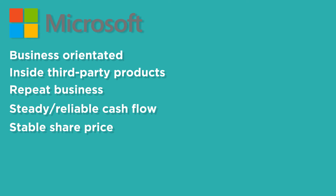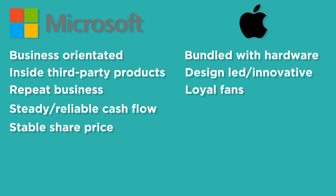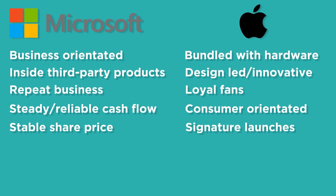Microsoft has a steady, reliable cash flow which means its share price is stable and it's on the up as a company. Apple does similar things but has a different business model — it sells the software combined with its own hardware. It's design-led and innovative, relies on loyal fans, and is consumer-oriented. So it is reliant on the latest technology and design — that's perception-driven, relying on signature launches of new products each year sold directly to consumers.